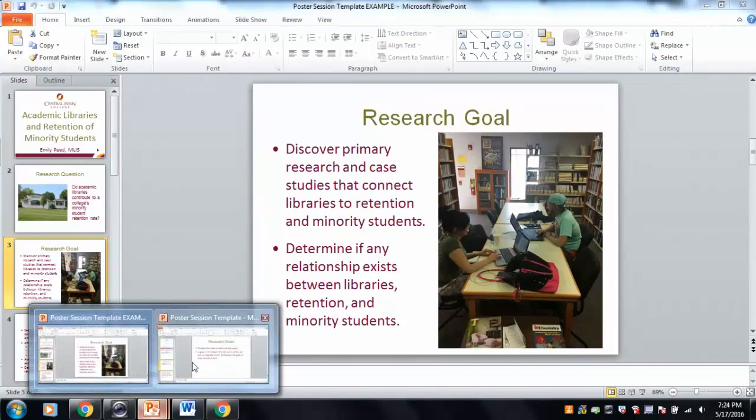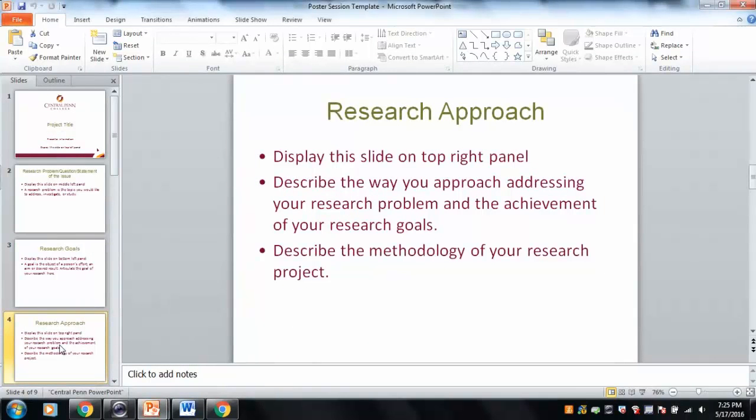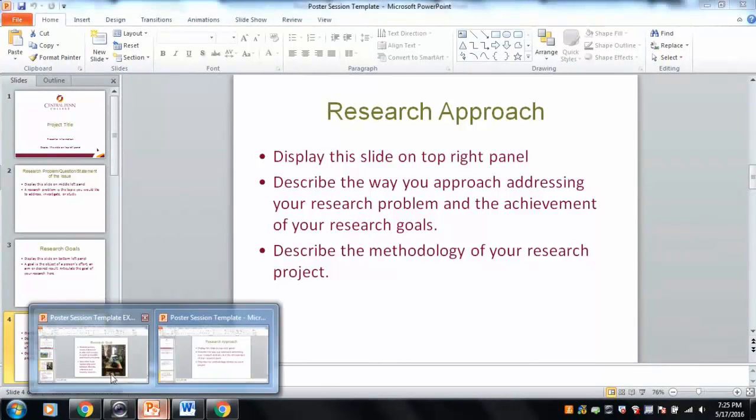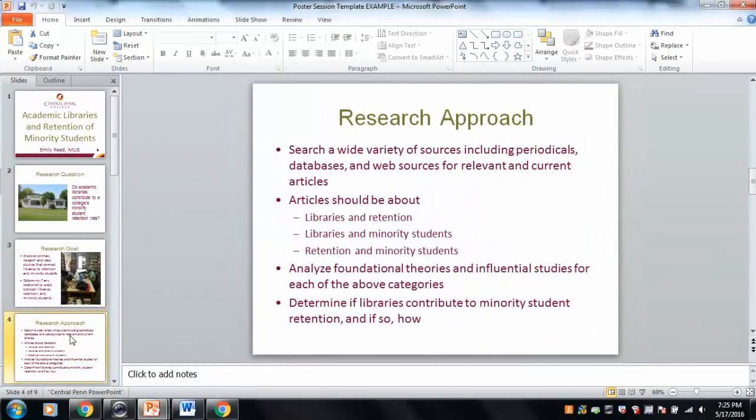The third slide is research goals. Here you want to talk about what kind of research are you conducting? Are you conducting primary research? Are you creating your own surveys and experiments and reports? Or are you looking for research that's already been done by someone else? Let me open up my example. For my example, I aimed to discover primary research studies conducted by other researchers. I did not conduct any primary research myself. I didn't create any surveys or conduct any experiments. My goal was ultimately to determine if any substantial relationship exists between libraries, minority students and retention. I also chose to include a graphic that I felt adequately represents my research question.